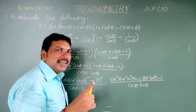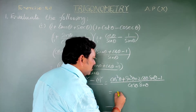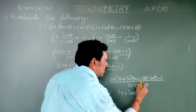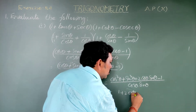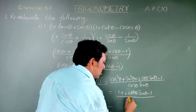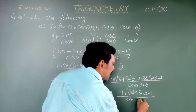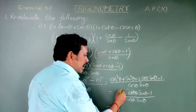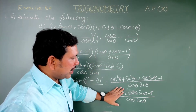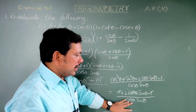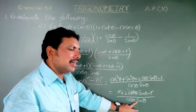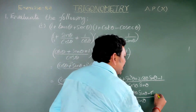Now, cos²theta plus sin²theta equals 1 by the trigonometric identity. So this is 1 plus 2 cos theta sin theta minus 1, divided by cos theta times sin theta. Here, plus 1 and minus 1 cancel. The remaining part is 2 cos theta sin theta divided by cos theta sin theta, and cos theta sin theta cancels, leaving 2.